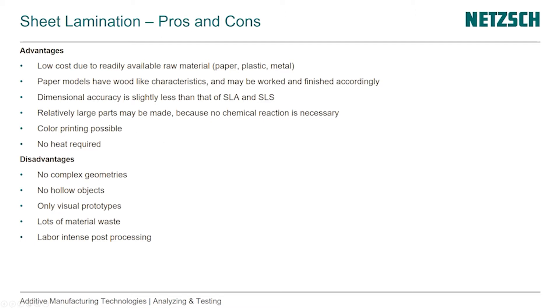There's no chemical reaction needed, so no exothermic reaction can happen. Color printing is possible — the color is normally printed just on the edges of what you see, and no heat is required. But disadvantages, as you saw in the video: no complex geometries, no hollow objects — some of the things that we really like about additive manufacturing.